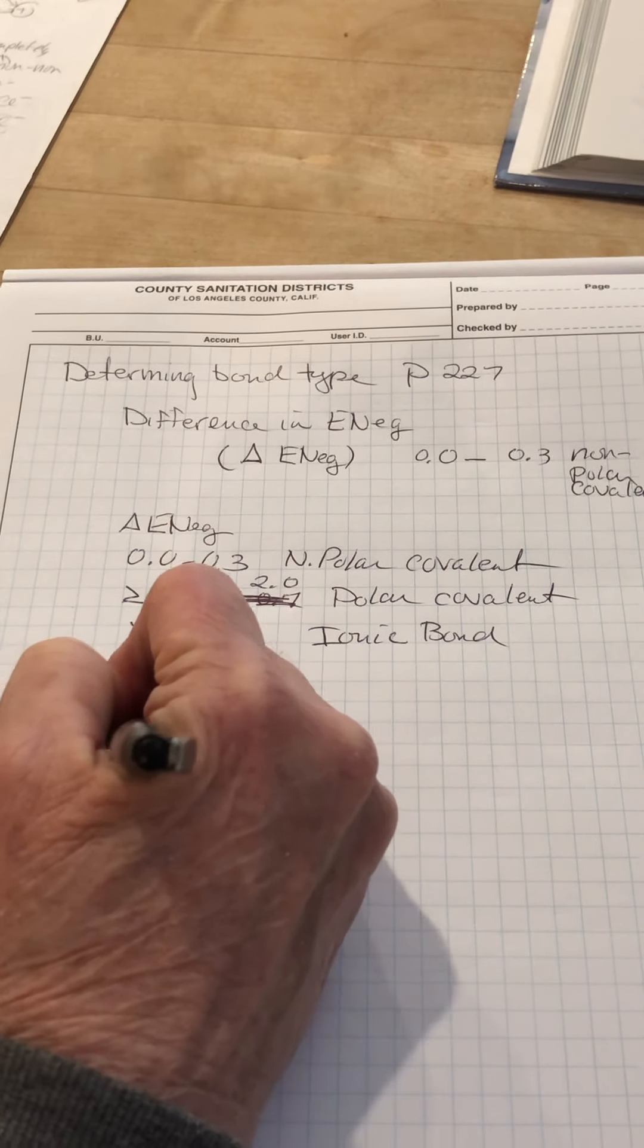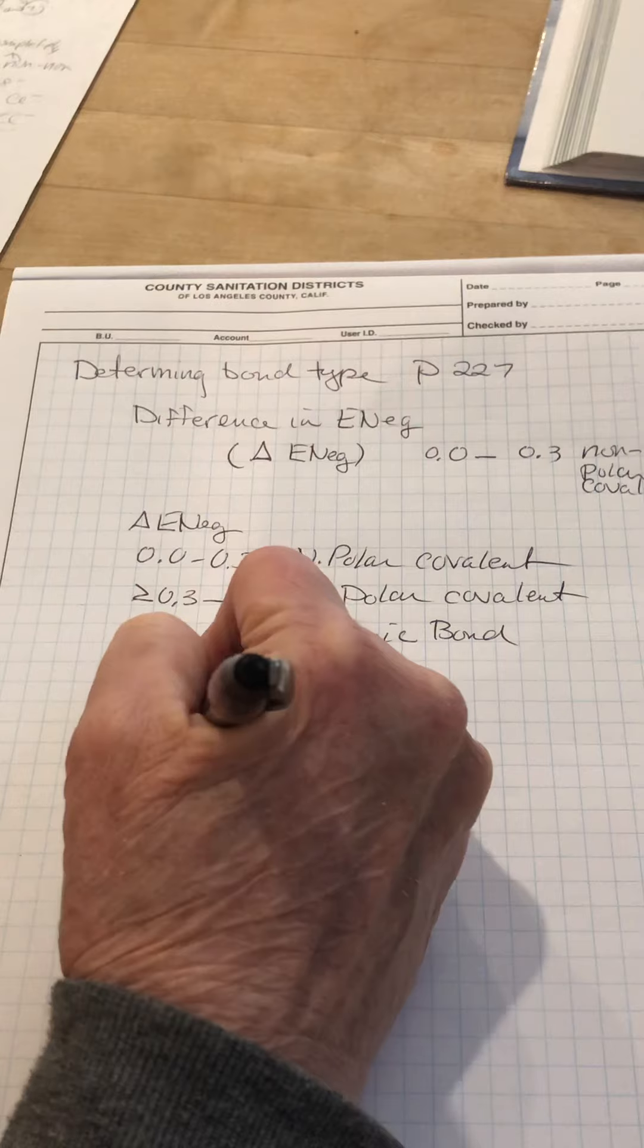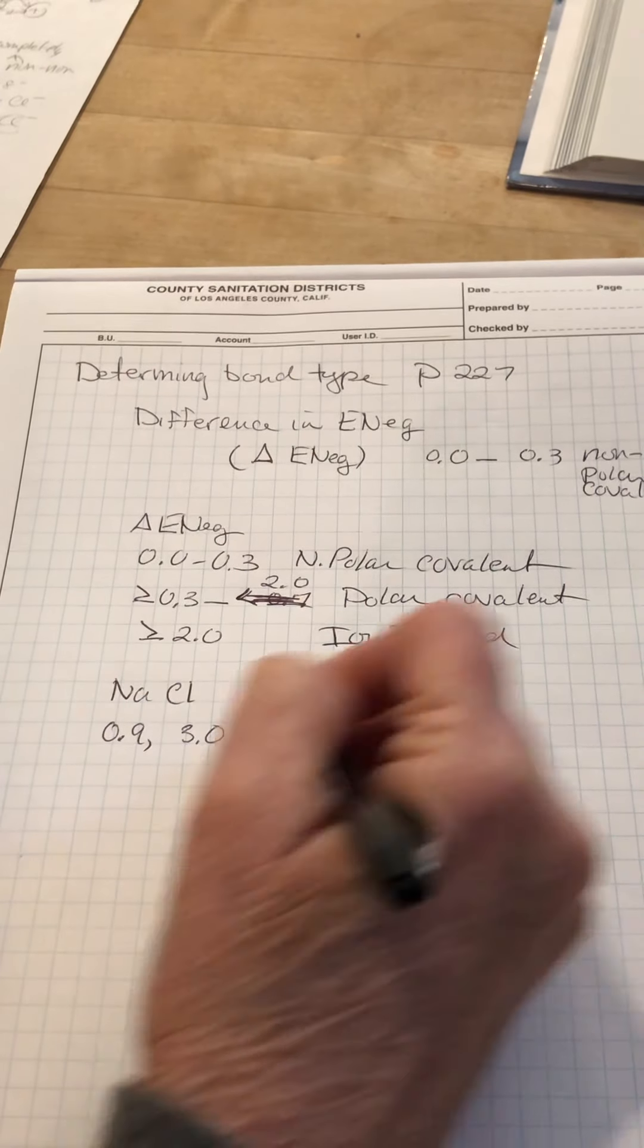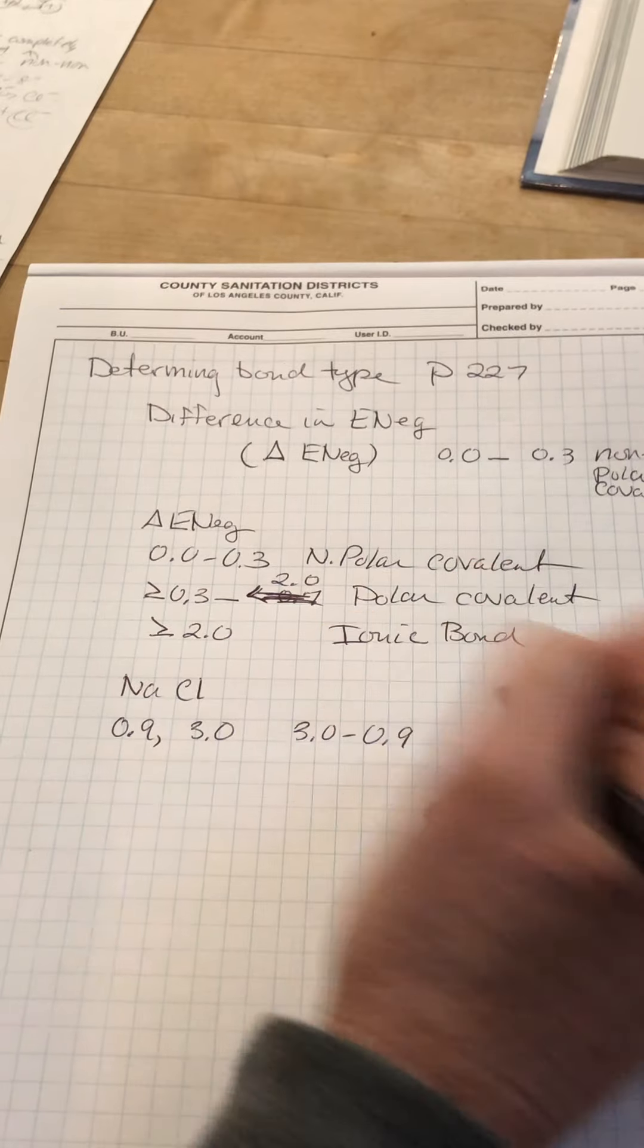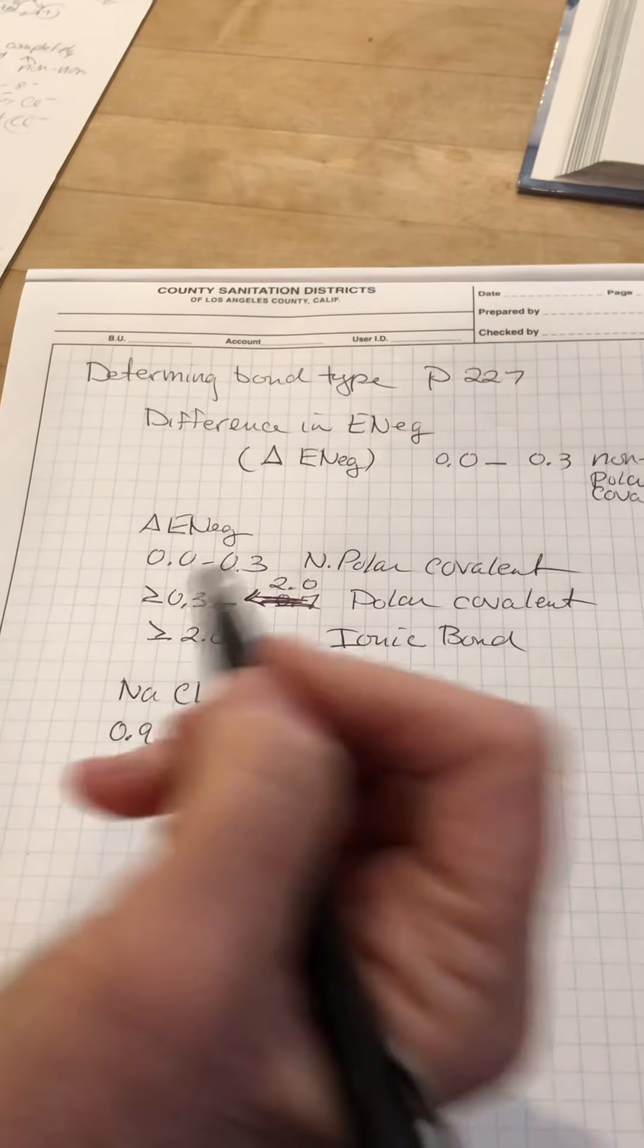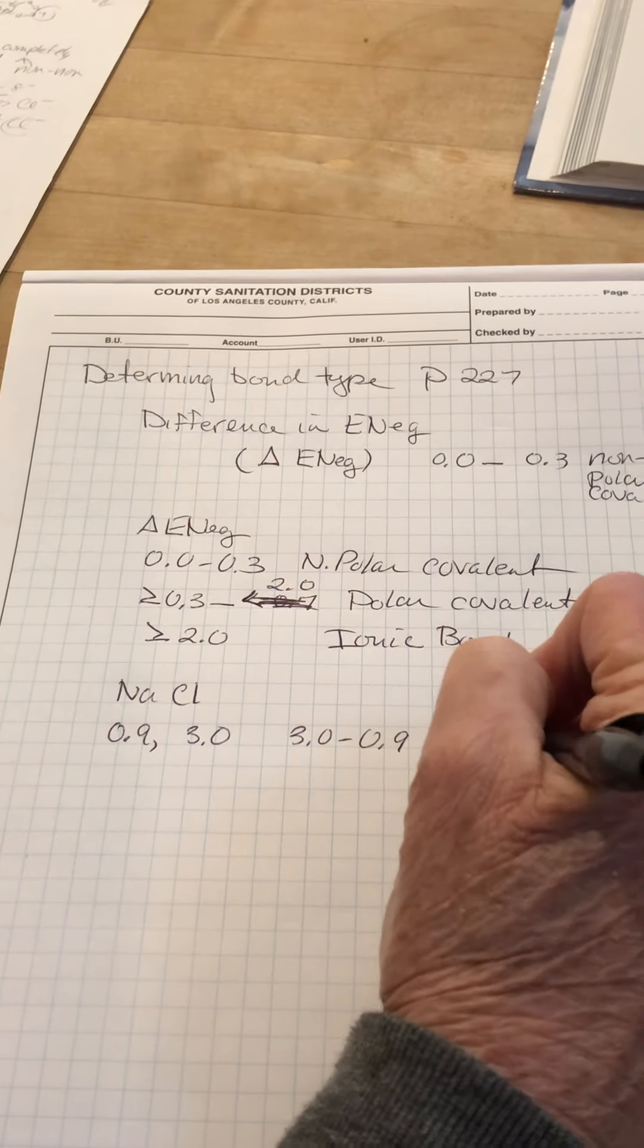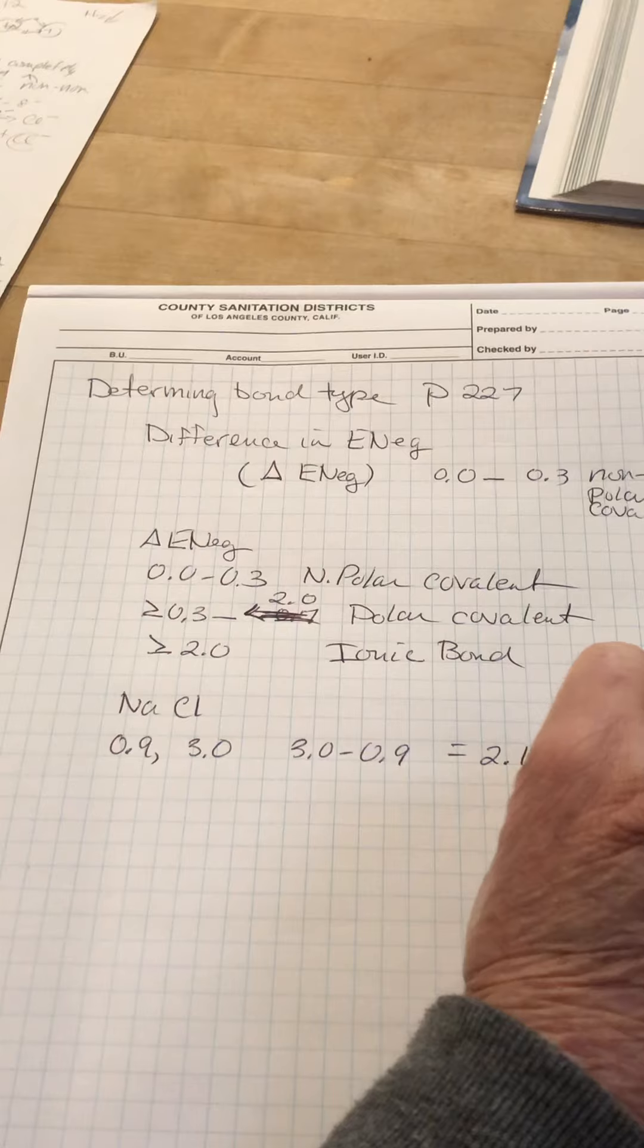Sodium's electronegativity is 0.9. Chlorine's is 3.0. The difference between these numbers, 3.0 minus 0.9, just take the absolute value, it doesn't matter whether you put the bigger number first or not, is 2.1. That gives you an ionic bond.